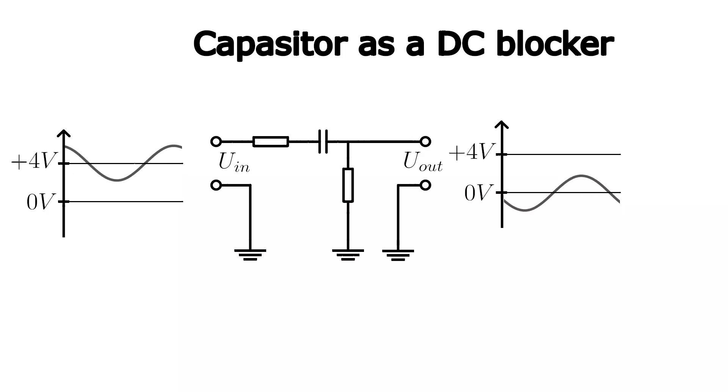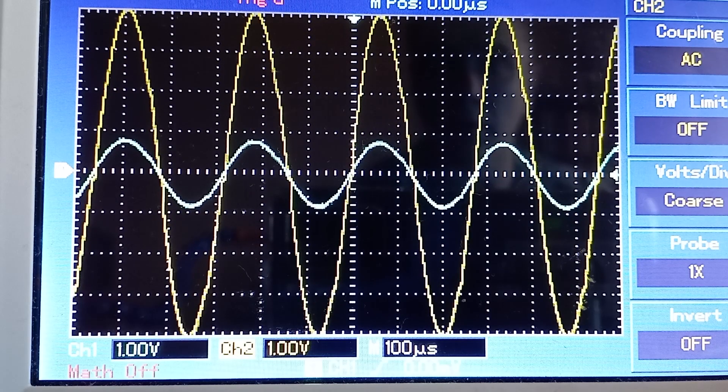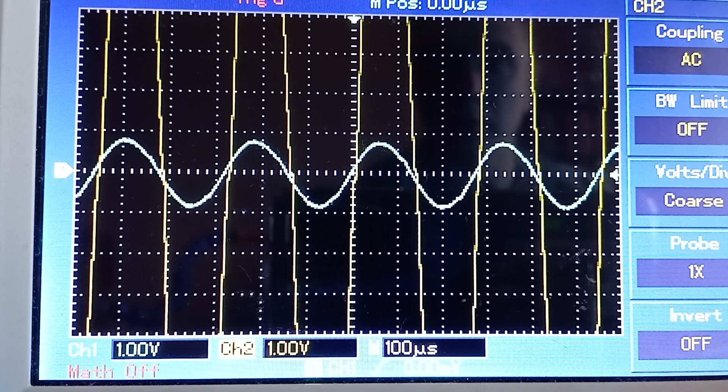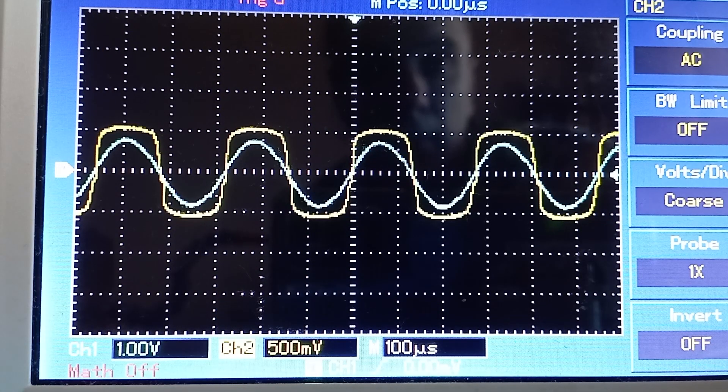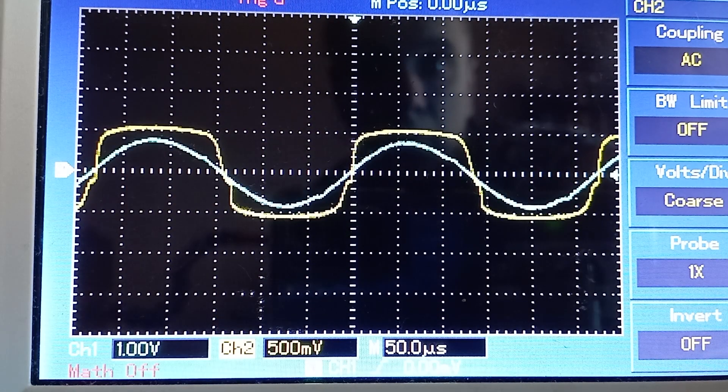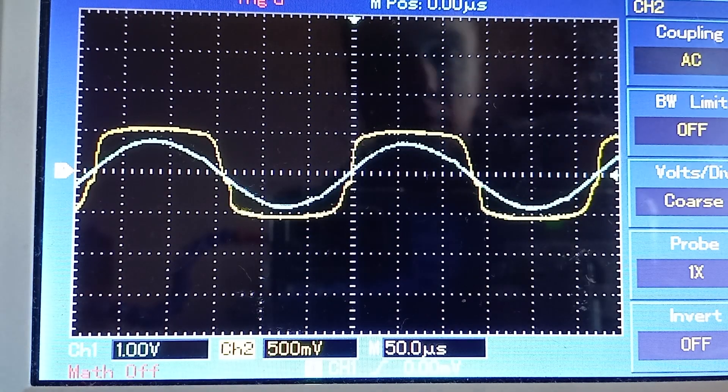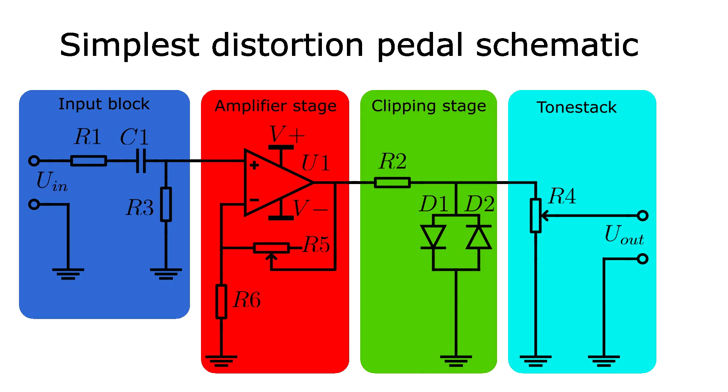Let's review the main parts of our setup once again. The input stage receives a signal from outside, filters out the DC component and passes the AC signal. The amplifier increases the amplitude of the signal. The clipping stage cuts off the peaks that saturate and compress the signal. The volume potentiometer adjusts the volume.